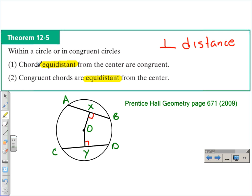So, in part 1, chords equidistant from the center are congruent. So, if we know that chord AB and chord CD are the same perpendicular distance from the center, then we know they are congruent or they have the same measure.